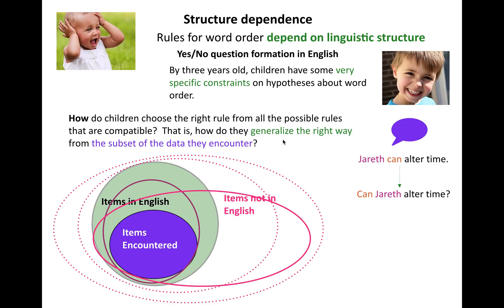That's a specific type of generalization. So the question is, how do children choose the right rule from all the possible rules that are compatible with the input they actually get — which is usually very simple input compatible with lots of different generalizations? How do they generalize the right way?